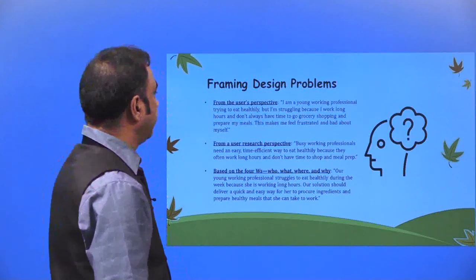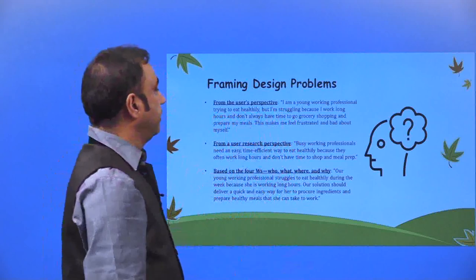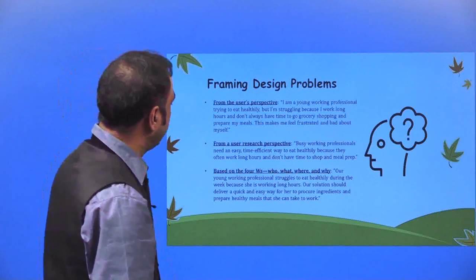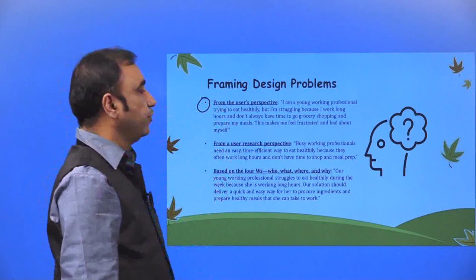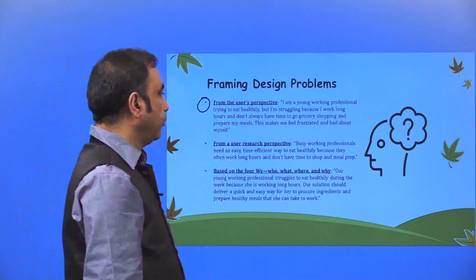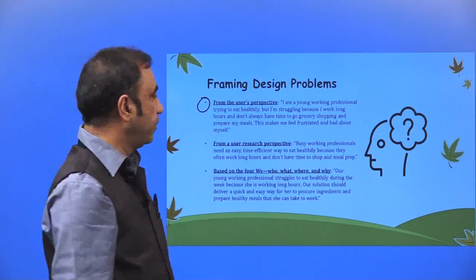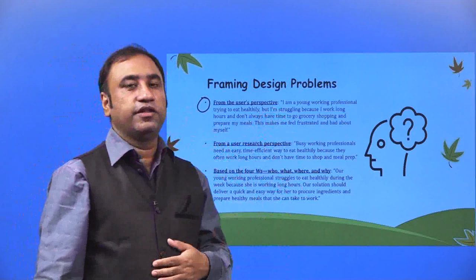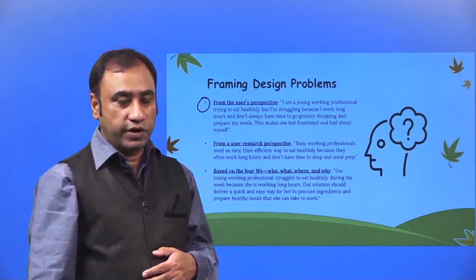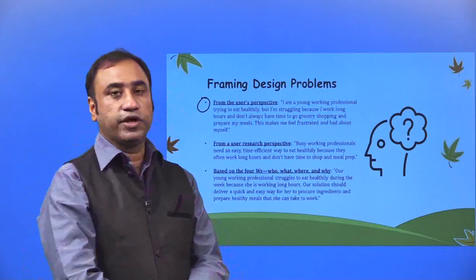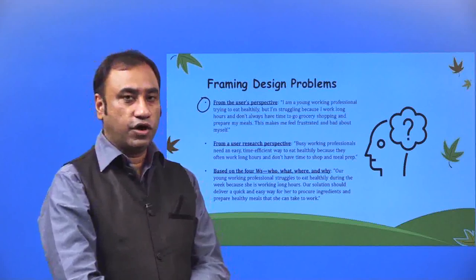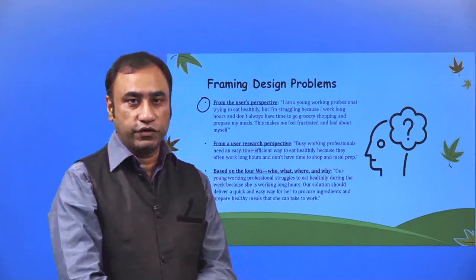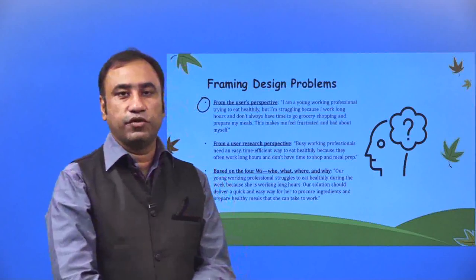Framing design problems from the user's perspective: 'I am a young working professional trying to eat healthily, but I am struggling because I work long hours and don't always have time to go grocery shopping or prepare my meals. This makes me feel frustrated and bad about myself.' This is the current state — somebody not having time, eating unhealthy food, not able to go grocery shopping and not able to prepare food properly. The desired state is healthy food available even when they can't go shopping.